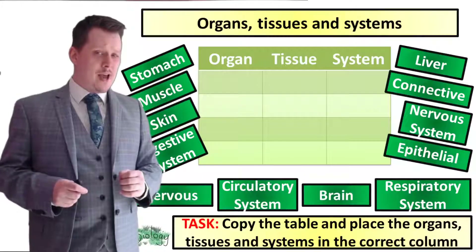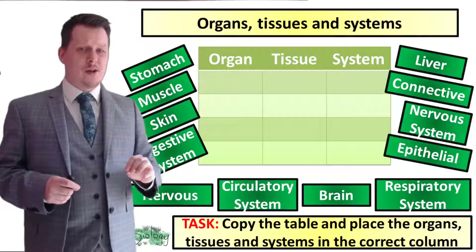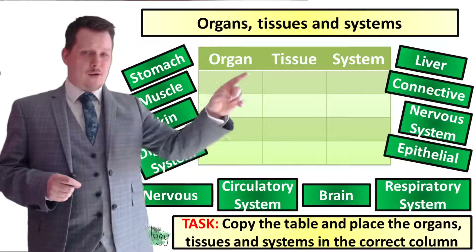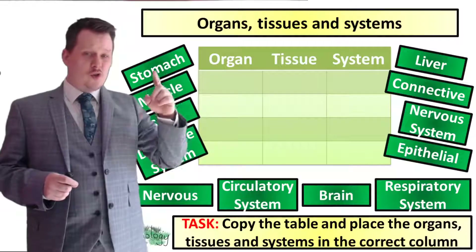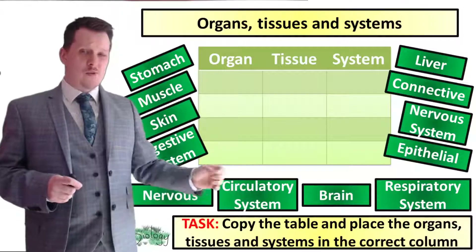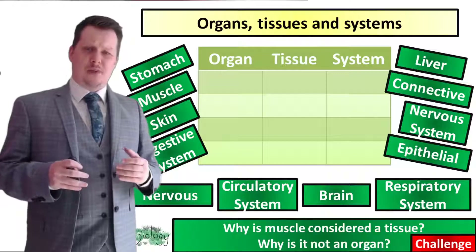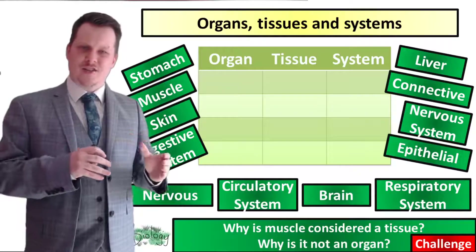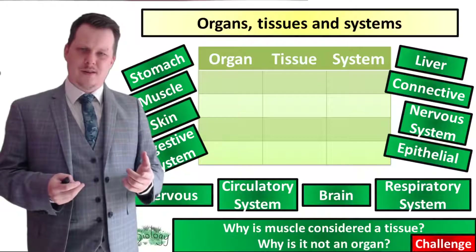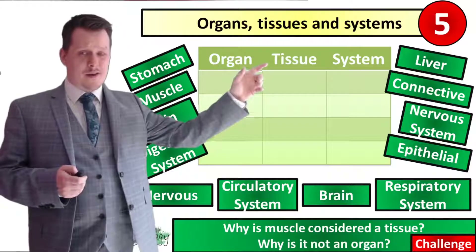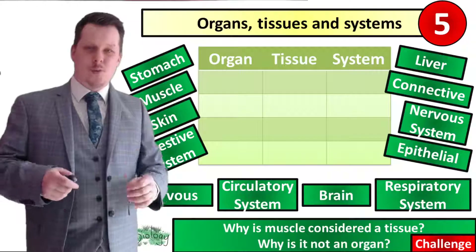Underneath each one of these headings I would like you to write down four examples of organs, four examples of tissues, and four examples of organ systems using the words which were around the table. If you need a challenge I'd also like you to explain why muscle is considered a tissue — why is it not considered an organ? I'm going to put five seconds on the clock. If you need more time pause the video and when you're finished we'll go through it together.